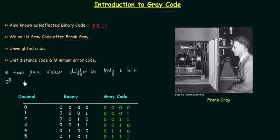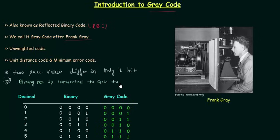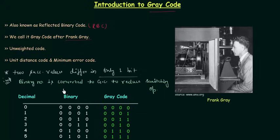Because of this, binary numbers are converted to gray code to reduce switching operations. So these are the two important points: the first one is that successive values differ in only one bit in the case of gray code, and second, binary numbers are converted to gray code to reduce switching operations.